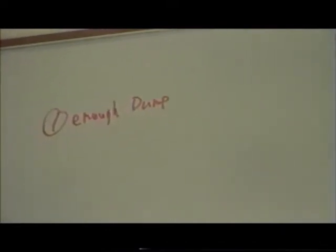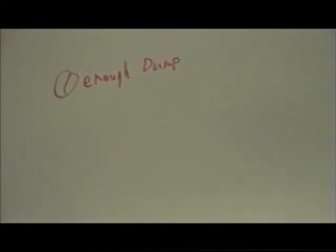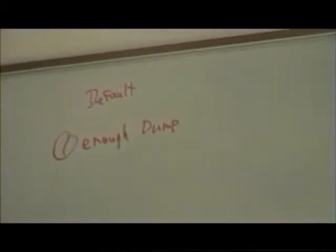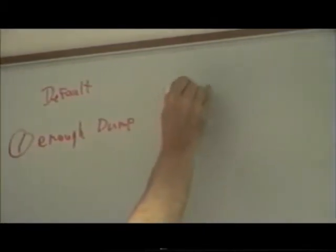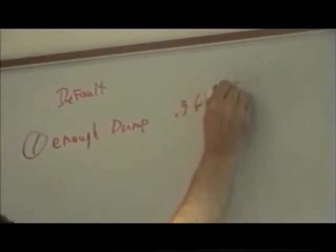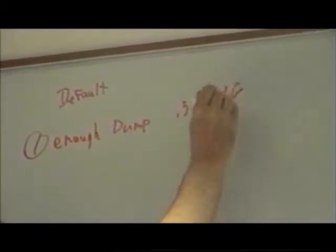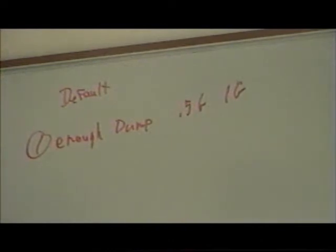It depends upon the type of the system, but on these you just go with the default, which is 100 meg or something like that. Usually you've got a default here first. But when setting it for a dump, they go like 0.5 gig to 1 gig, depending upon the number of CPUs and how big the system is.